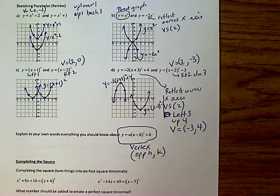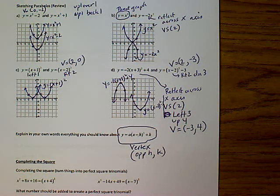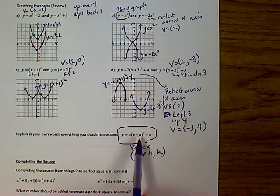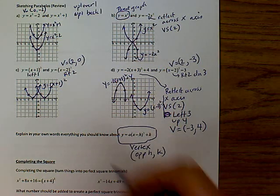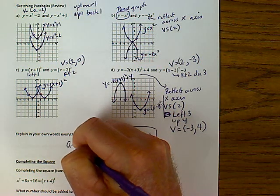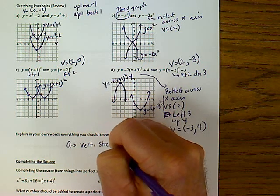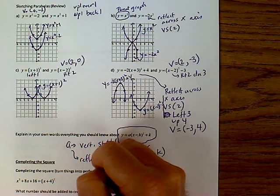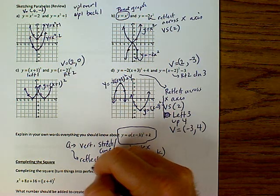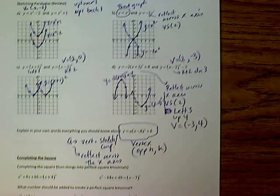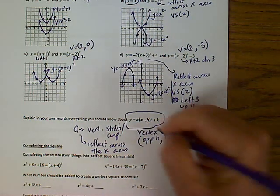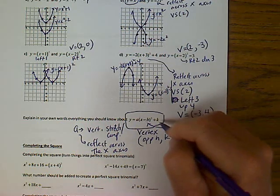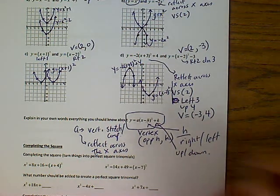All of this you've done in Integrated 2 — how well do you remember it? That's always the issue. To explain in your own words everything we should know: the vertex is the opposite of h, comma k. The variable a produces a vertical stretch or compression, and it can also reflect the parabola across the x-axis. The h controls right-left shifting, and k controls up-down shifting.